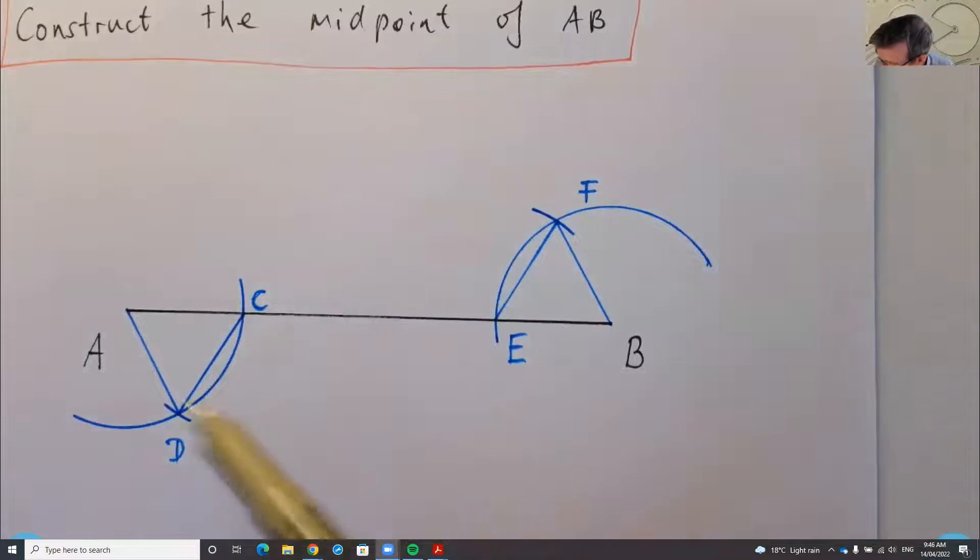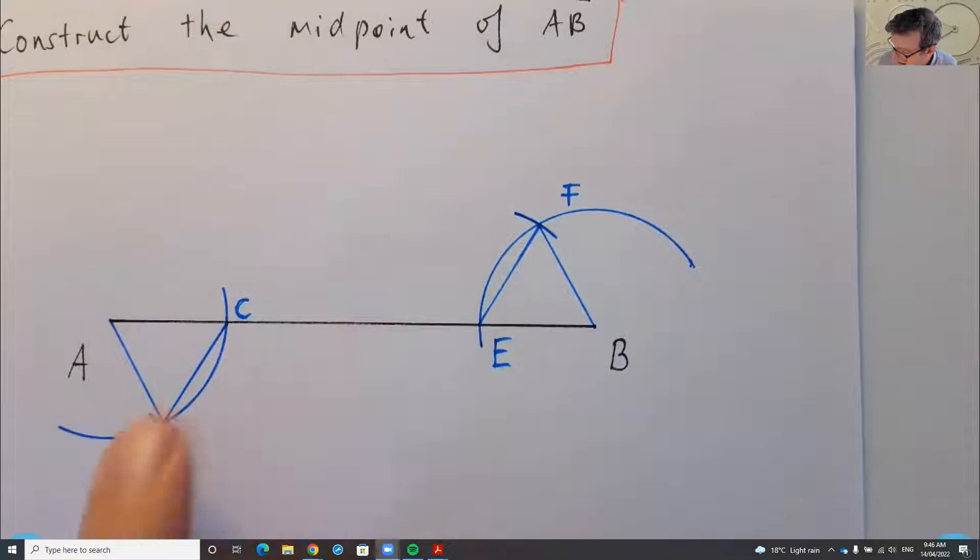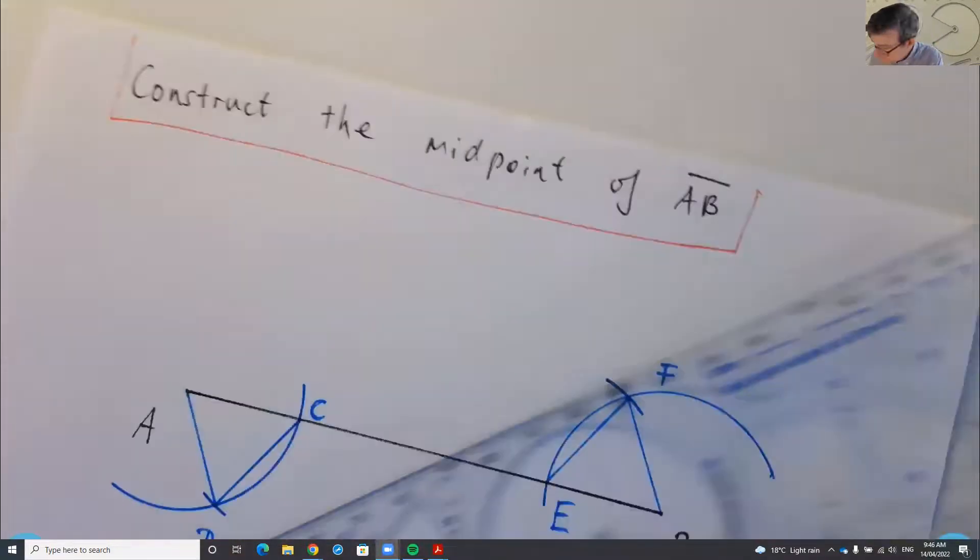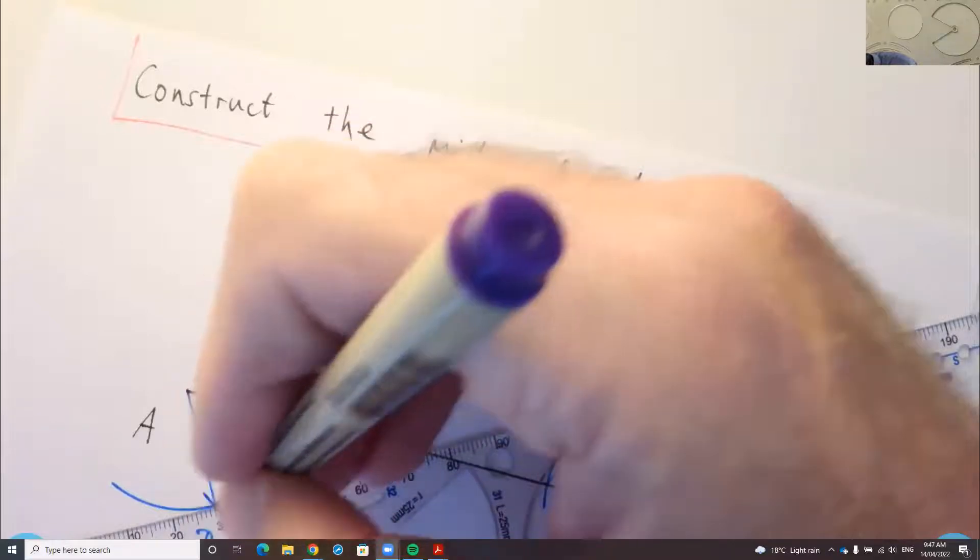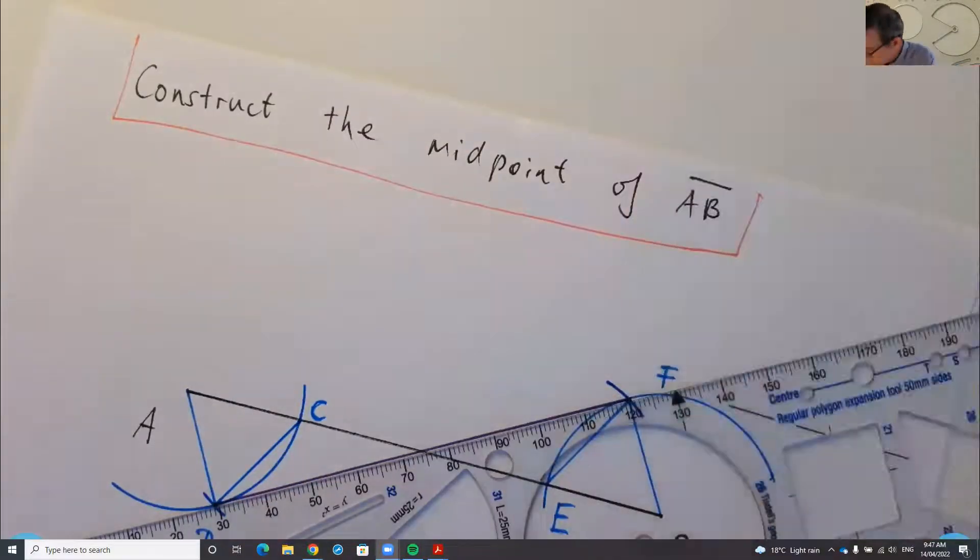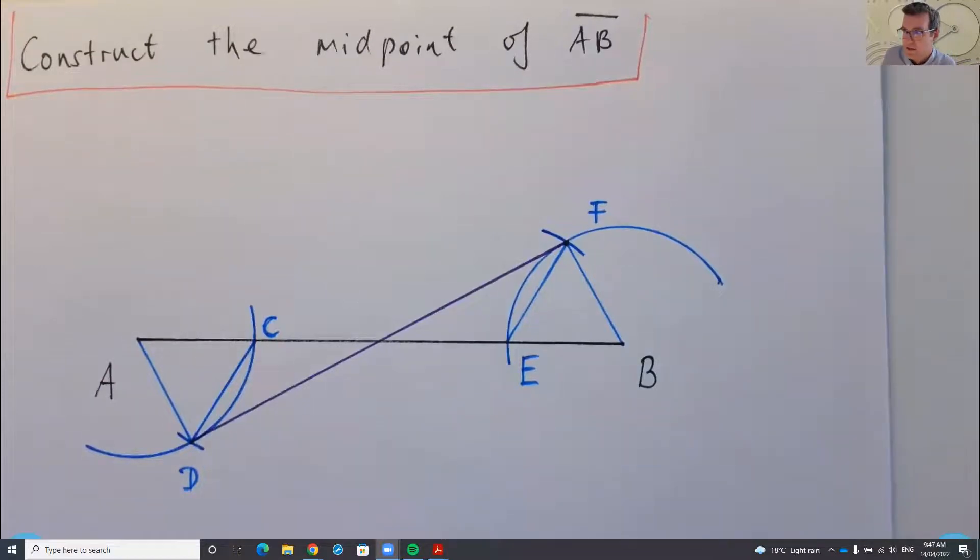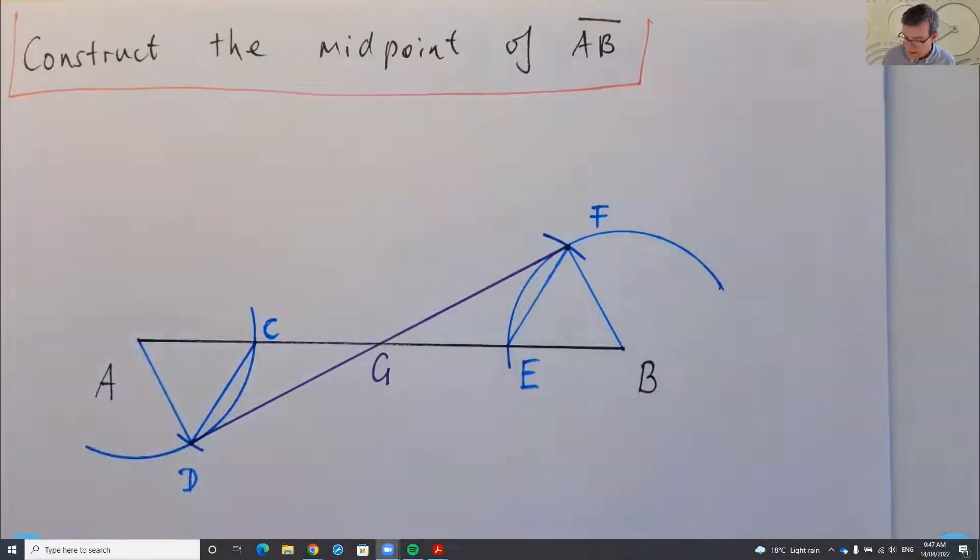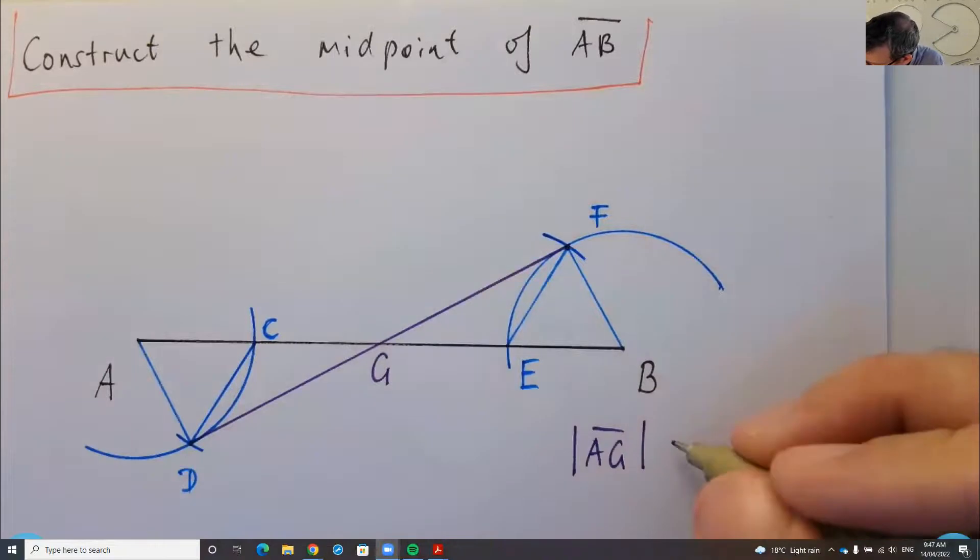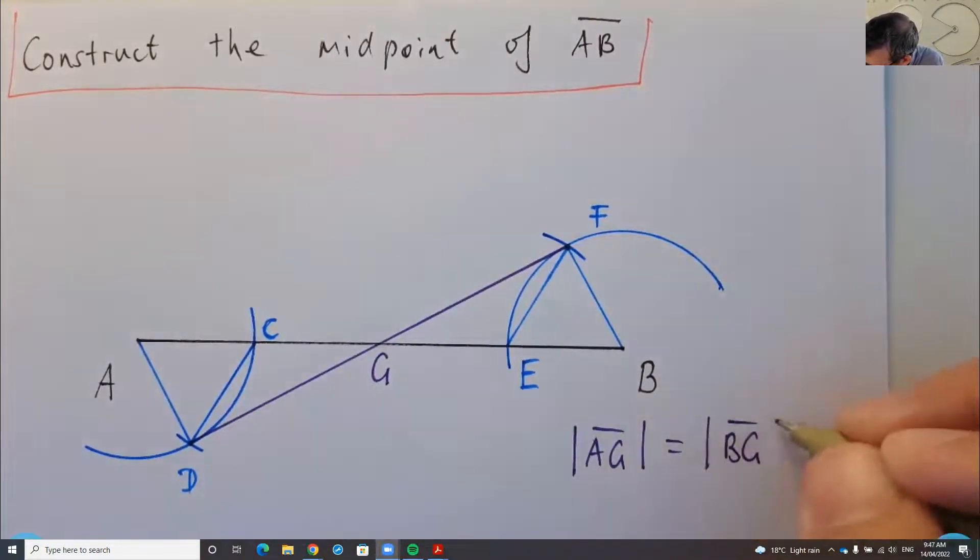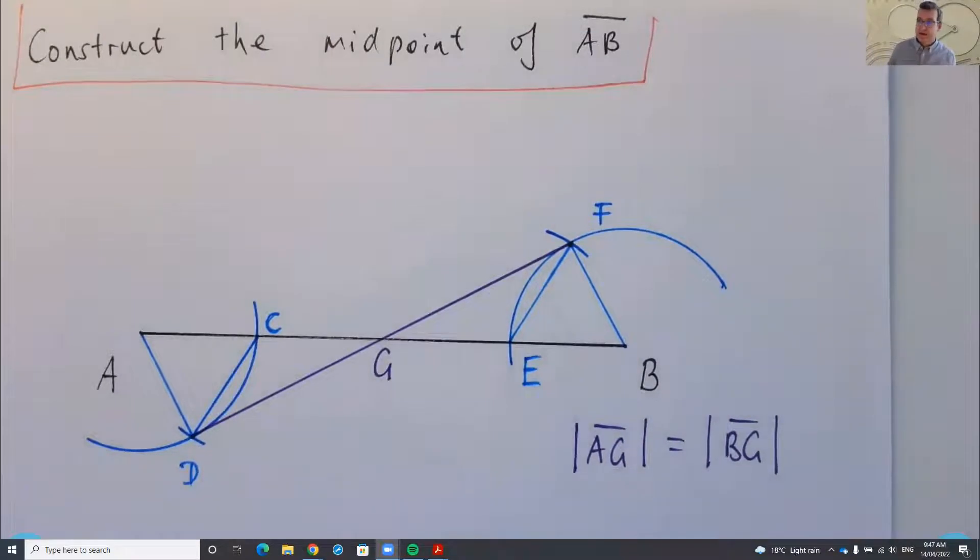So what we're going to do now is join D with F. And actually that's the last part of the construction because that's going to cut the line AB and it's going to cut it into two equal pieces. So I've got a new point there. Let's call it G. And the claim is that AG equals BG. So the length of that line segment equals the length of that line segment. So that's the basic construction.